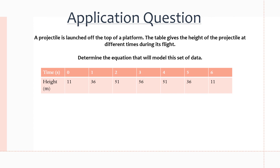In this example we have an application question. A projectile is launched off the top of a platform. The table gives the height of the projectile at different times during its flight, and we need to determine the equation that models this data. The vertex is at (3, 56), because for all quadratic functions, going one x-value up or down from the vertex gives the same y-value. That's how we know there's a vertex at (3, 56).